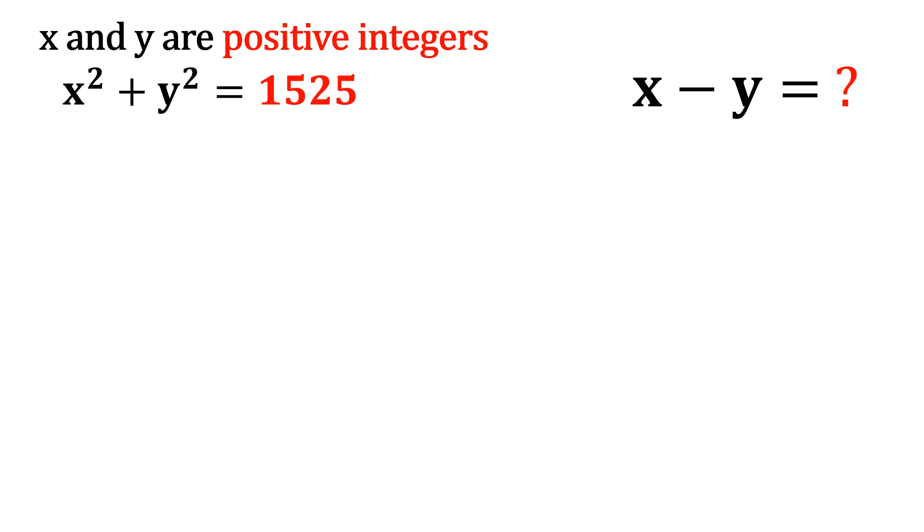If you see, only one equation where two variables x and y which we have to find out is given to us. How can we find this out? The only thing we can do is look at 1525. Let us start by factorizing it.